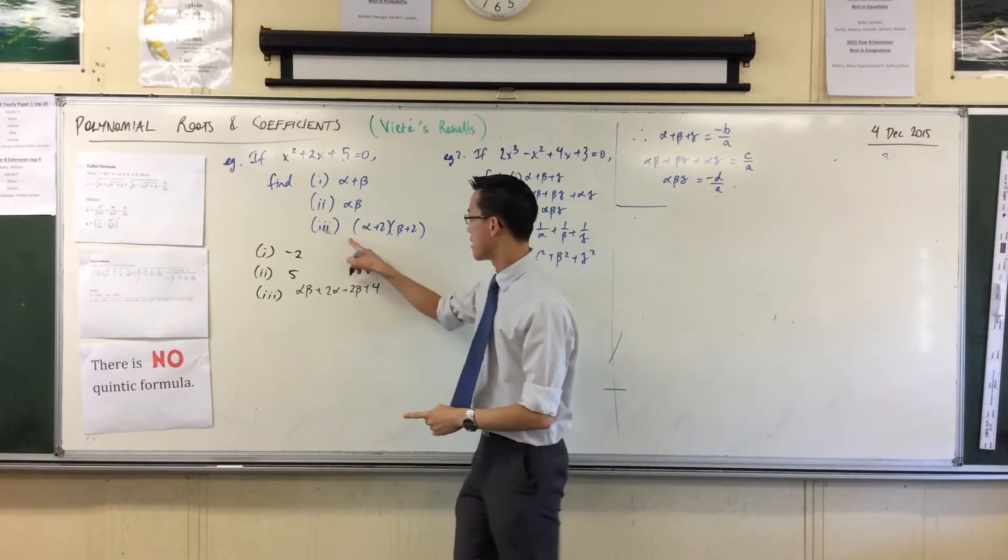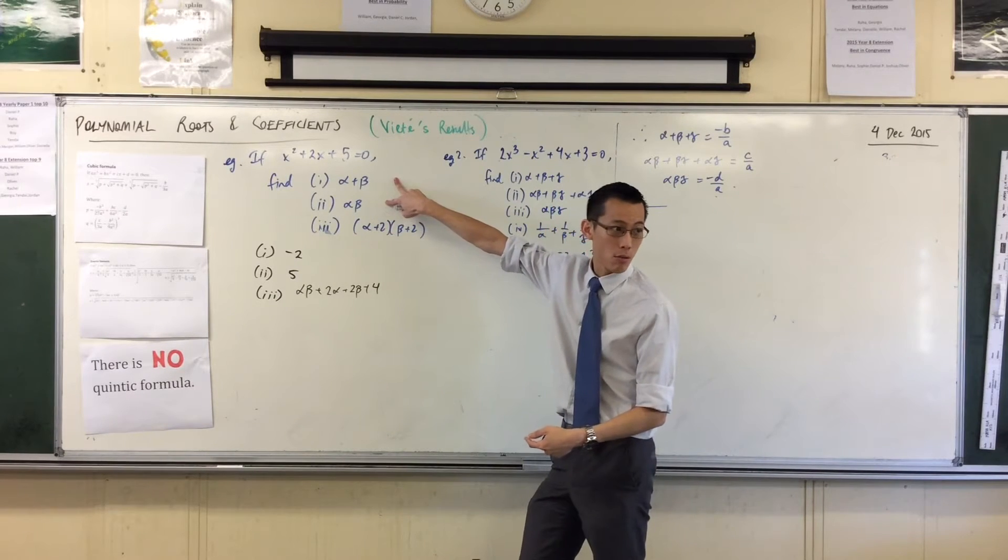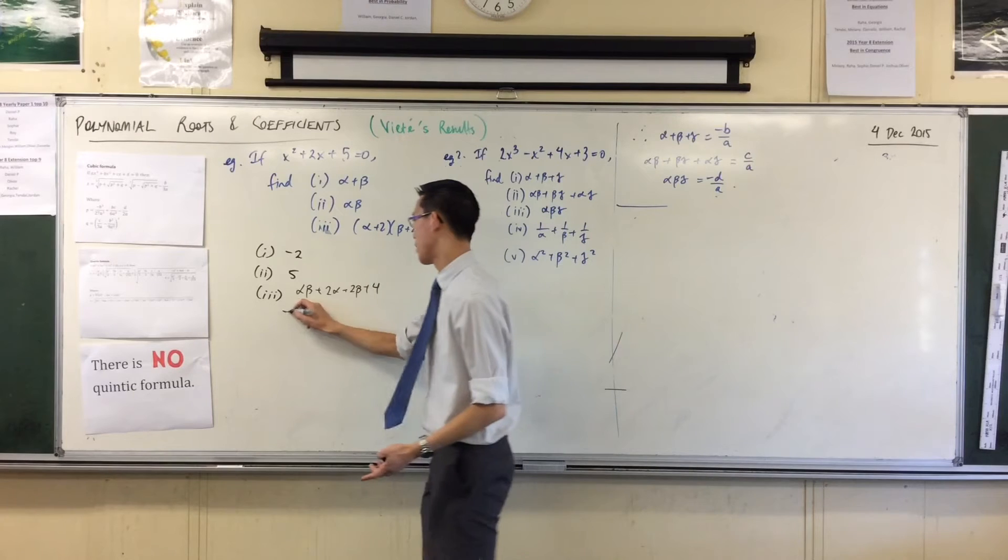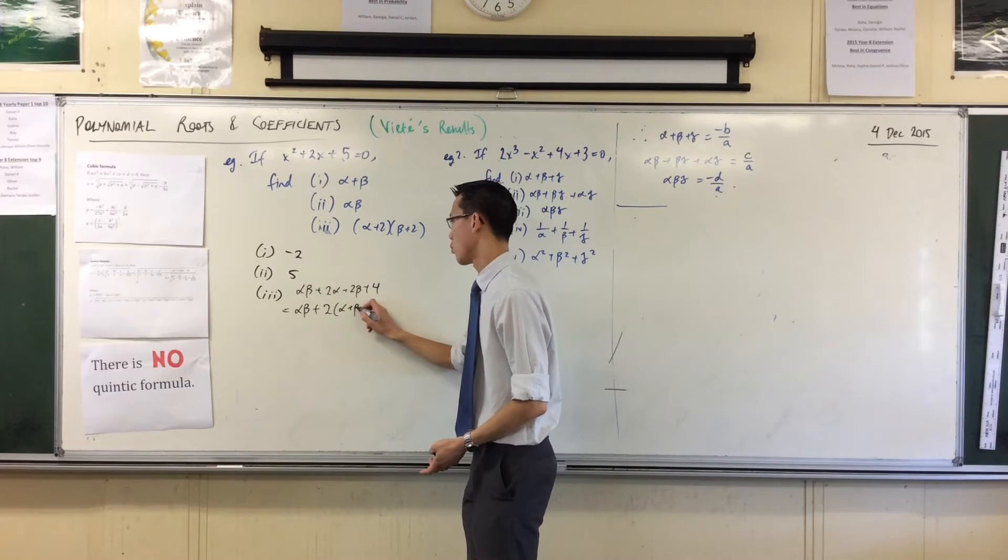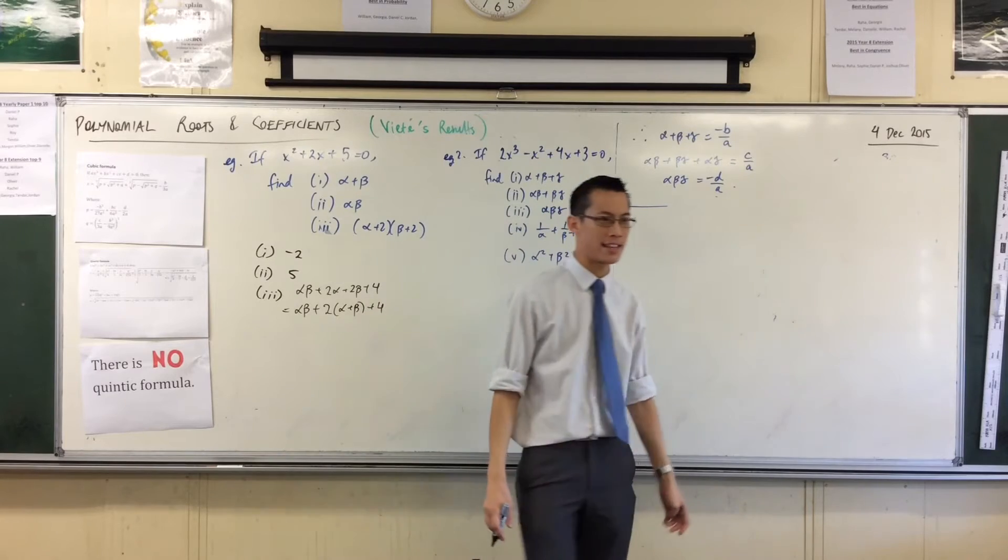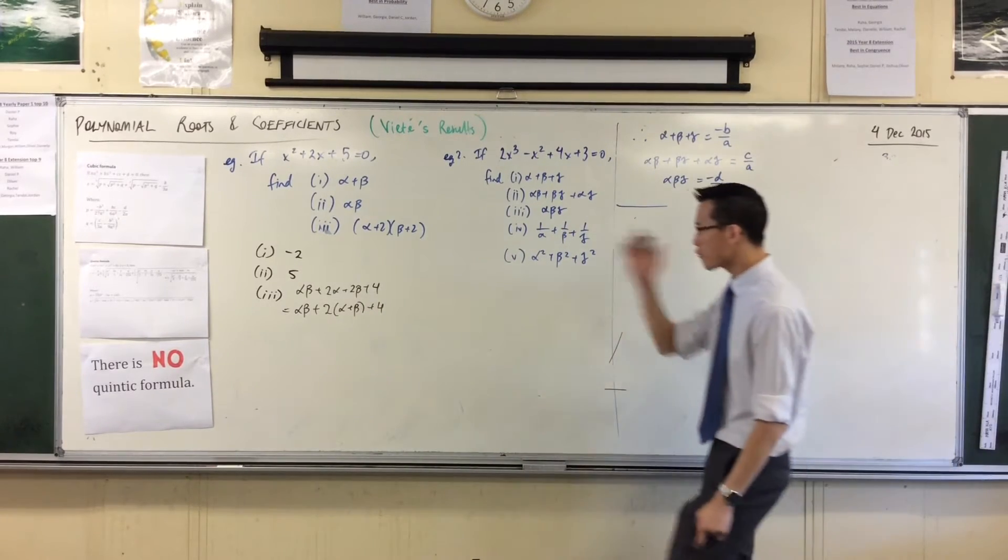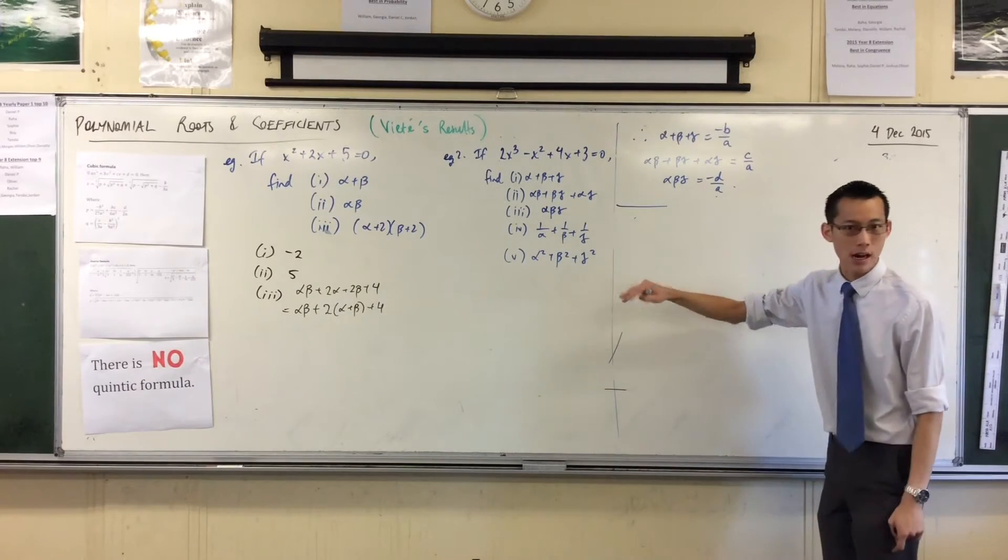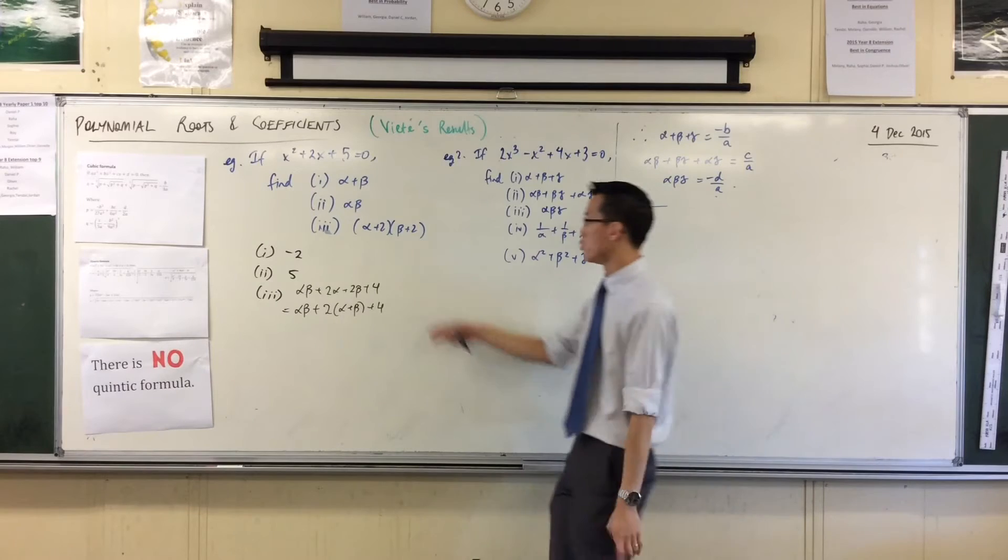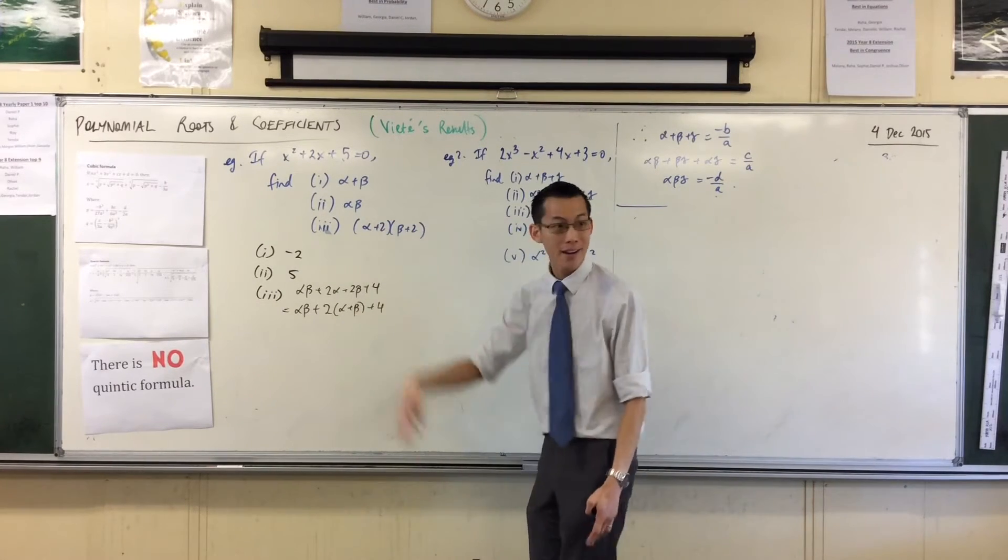Once I've got that, I can see that this guy is composed of these two in some combination. There's the sum two at a time, there's double the sum one at a time, and there's just a 4 hanging at the end. Therefore, every one of these kinds of questions - if you have a look at part 3 here, part 4 and 5 here - they always use these guys as the building blocks. That's all you've got to work with, but that's all you need.